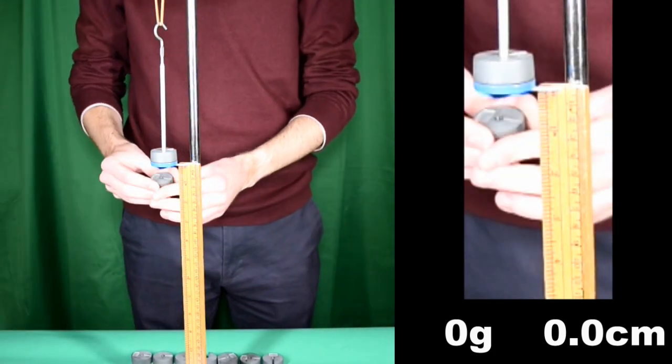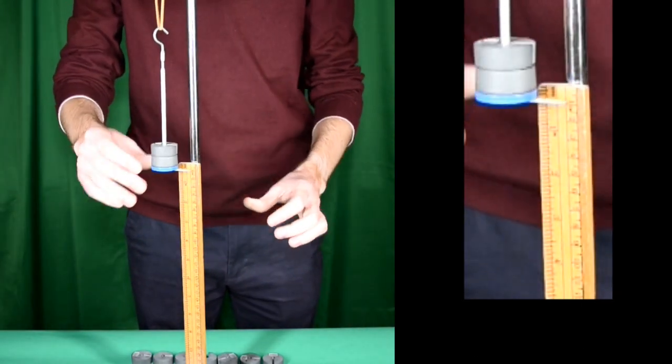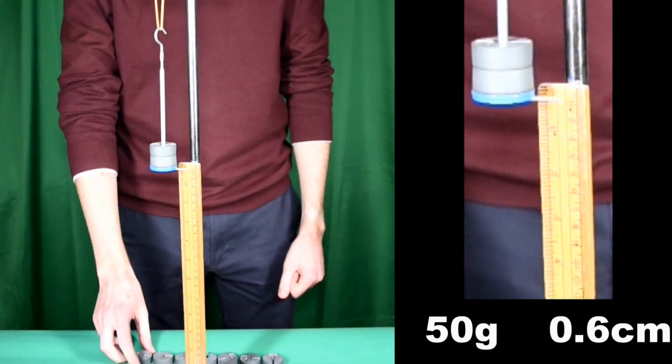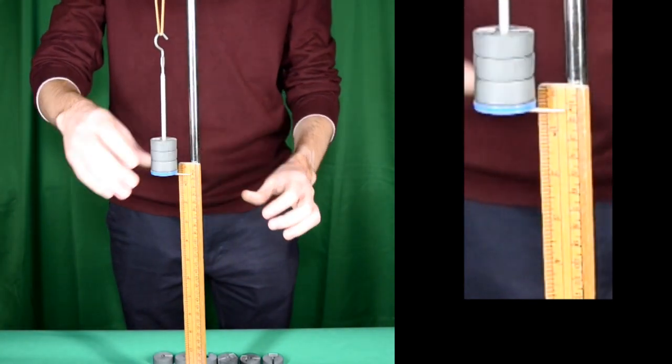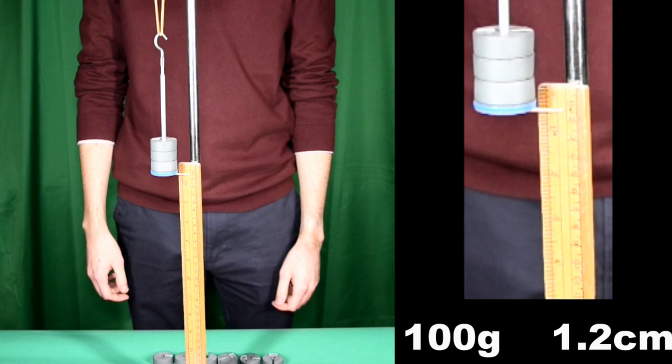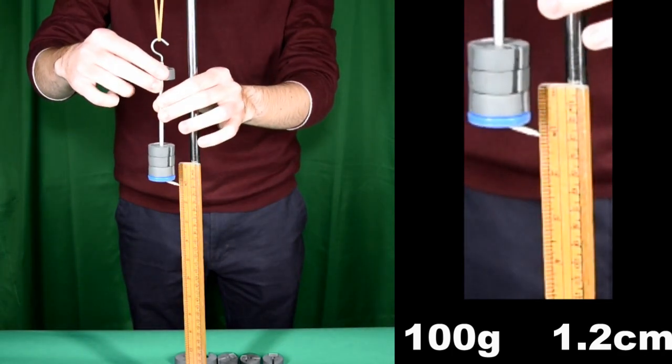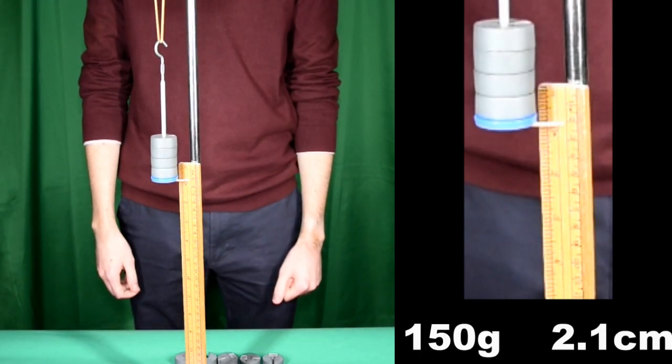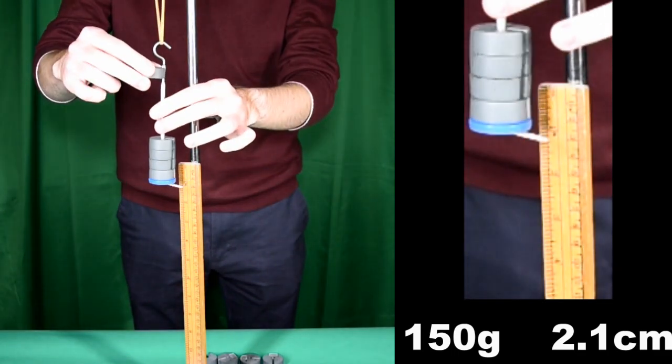It turns out an elastic band isn't really elastic. And what we're going to do this time is load the elastic band with 50 gram masses, and try and keep the time interval between each change the same. We'll then unload them and plot a graph of the results.